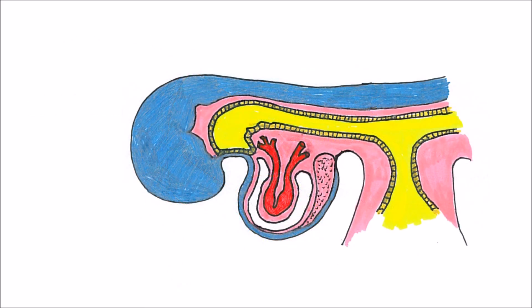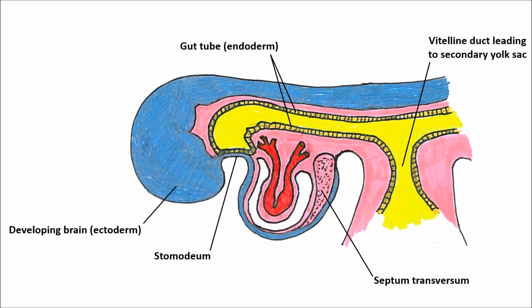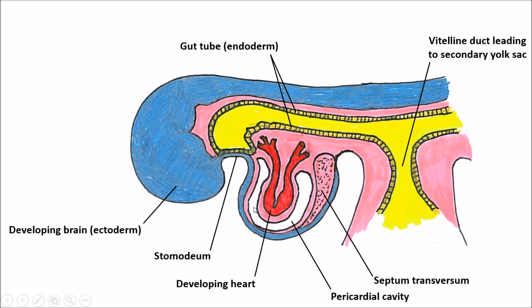As folding continues, the heart is tucked in ventrally; the developing brain is visible; the stomodeum forms an early mouth connecting to the gut tube from the outside, which is why once it ruptures we'll have communication from the outside into our foregut. The vitelline duct leading to the yolk sac is present a little further along. The septum transversum is hanging out between the abdominal and thoracic regions, contributing to the diaphragm. The developing heart pushes into the pericardial cavity; the pink layer lining the heart will form the visceral pericardium. The pericardial cavity is still connected to the peritoneal cavity at this point, but that's about to change.